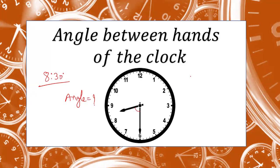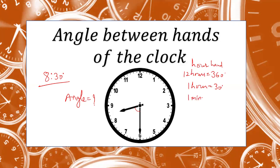Before I give you a formula, let me explain a particular concept. The hour hand moves a complete round in 12 hours, so in 12 hours it completes 360 degrees. In one hour it will complete 30 degrees, and in one minute it will cover 30/60, that is half a degree per minute. So the speed of the hour hand is 30 degrees per hour or half a degree per minute.